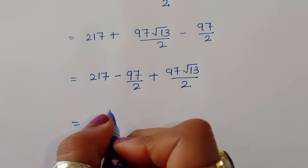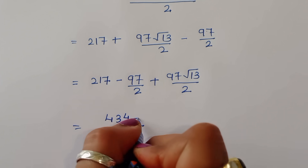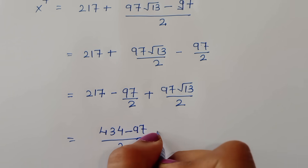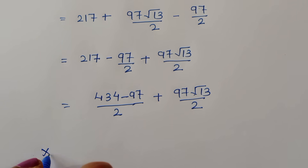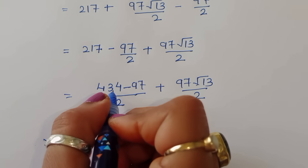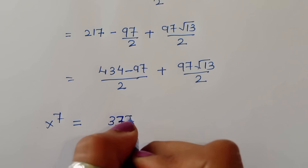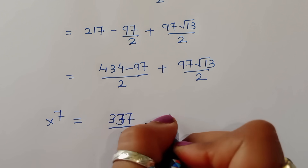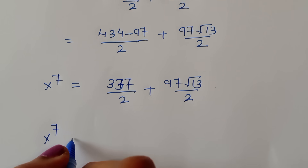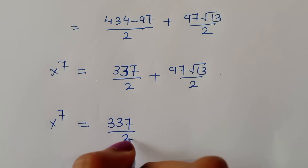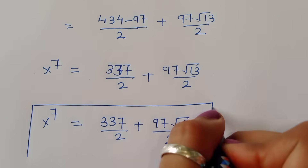Taking common denominator 2: x^7 = (434 − 97) / 2 + 97√13 / 2 = 337/2 + 97√13 / 2. So the final answer is x^7 = (337 + 97√13) / 2. This is the complete solution.